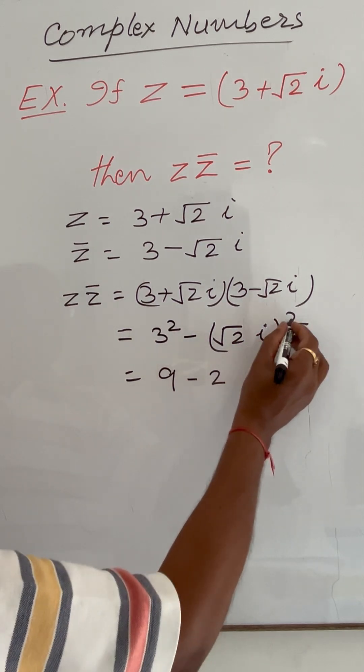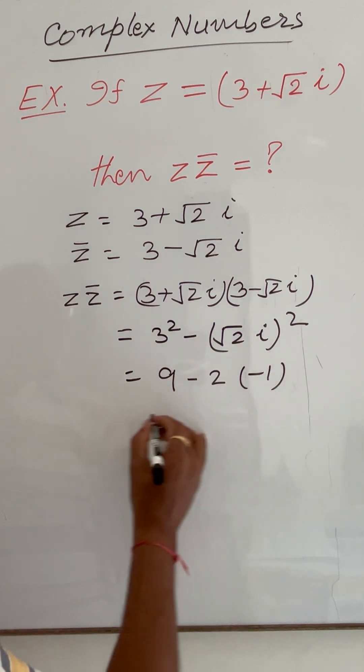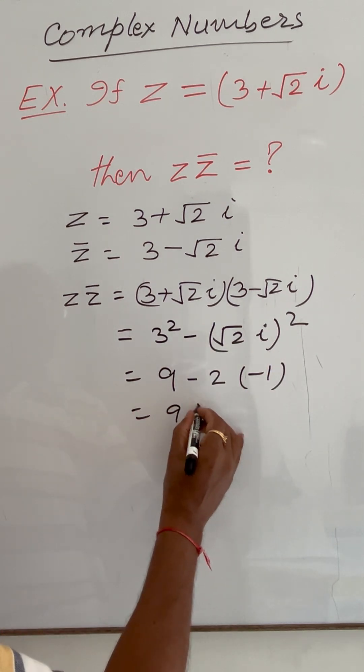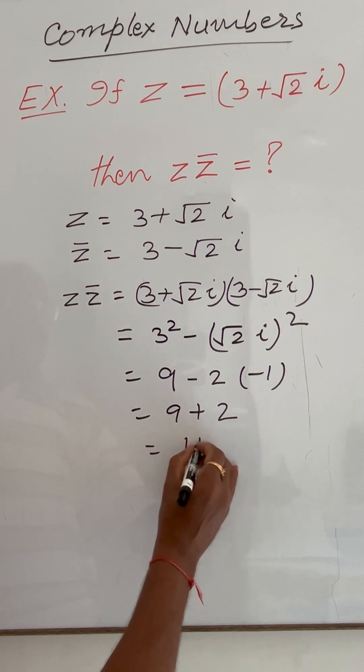(√2)² = 2 and i² = -1. So this equals 9 - 2(-1) = 9 + 2 = 11.